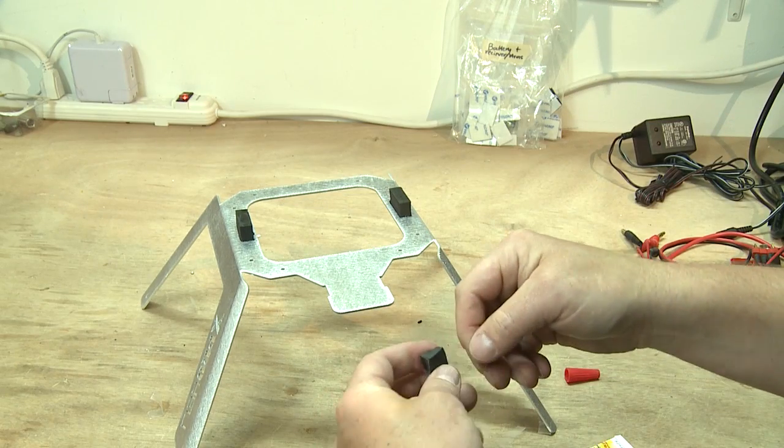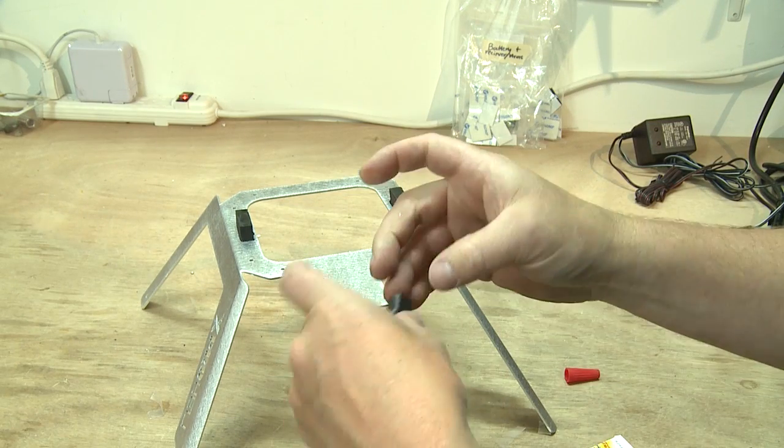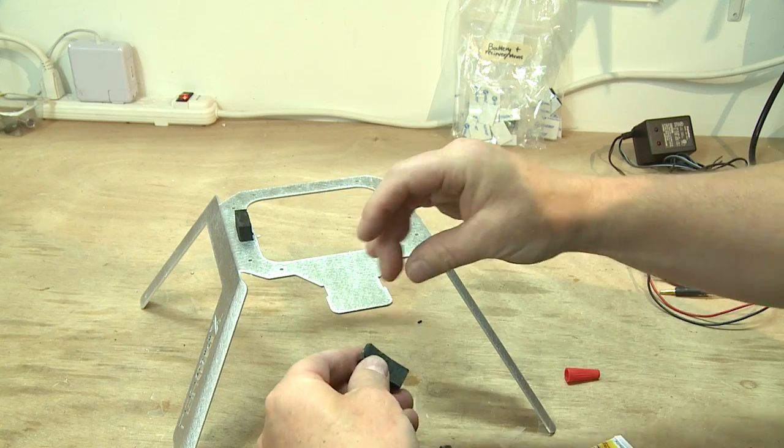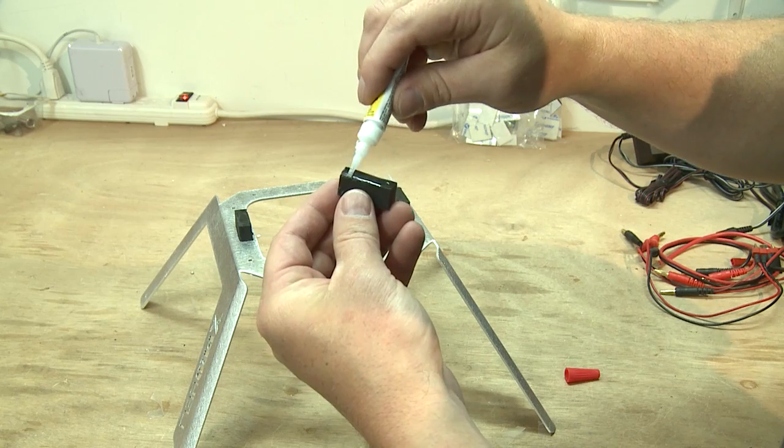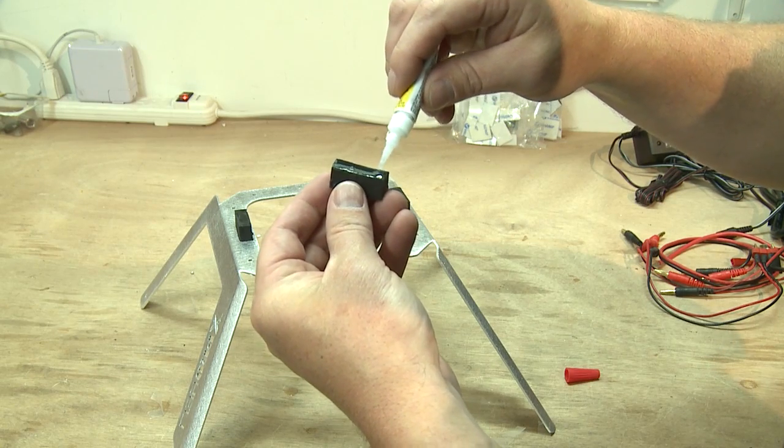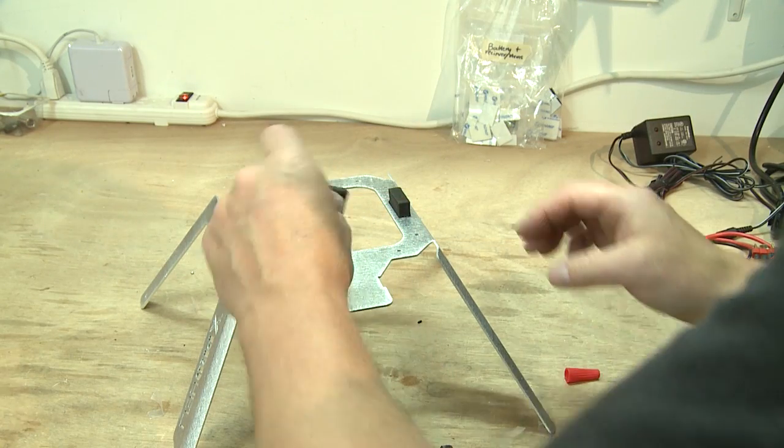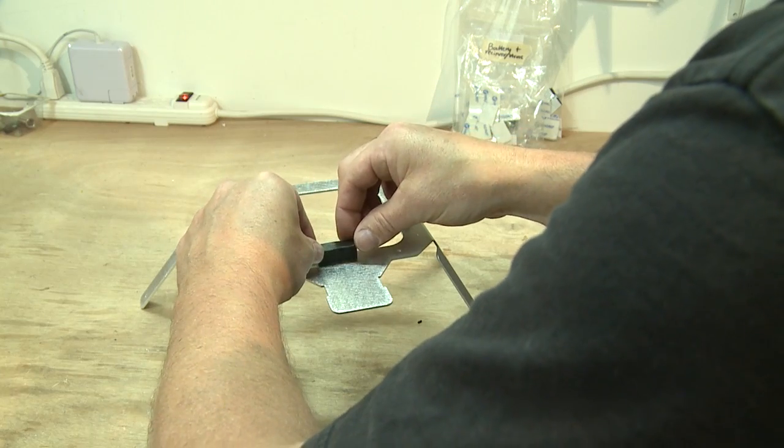But I'm just gonna go ahead and do all of them for you really quick. Make sure you remove that plastic stuff, otherwise it won't stick. And again, we're putting the tall side up. We don't want to glue on the flat way - it'll still work but it's not gonna work as well.